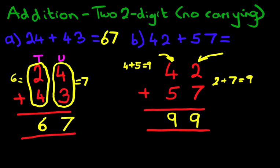And we have our answer. 99. 42 plus 57 is 99. What we can do is tick this one, because 24 plus 43 is 67. And this one, 42 plus 57 is 99. So that is the addition of two two-digit numbers with no carrying using the vertical format.